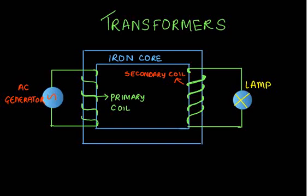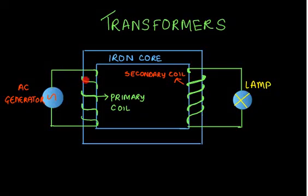Hello and welcome to this video brought to you by Smart Edu Hub Mumbai. Today's topic is transformers. Let us understand the basic construction of a transformer. The transformer consists of an AC generator — it will require an AC source of supply. There is a coil connected to this AC, and this coil is called the primary coil. The primary coil is wound on a soft iron core.